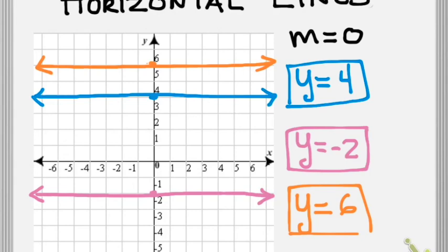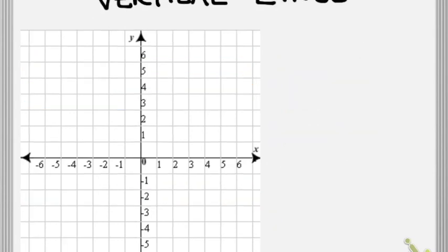But this is only the first special type of linear function. The other one we know is the vertical line. Now, the vertical line is a little bit different because we know that for this one, the slope is undefined.